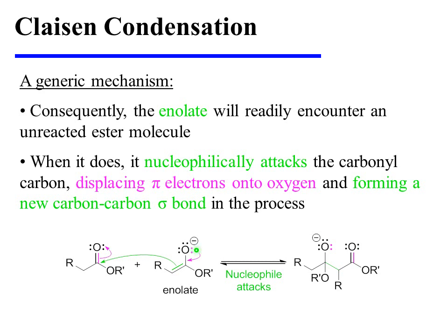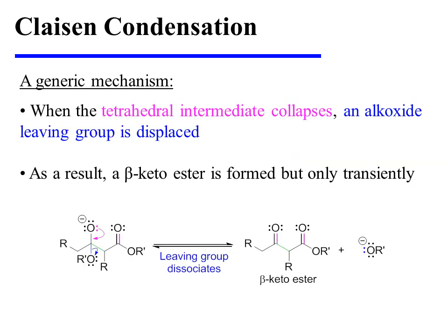When the ester enolate encounters an unreacted ester molecule, it nucleophilically attacks the carbonyl carbon, displacing pi electrons onto oxygen. A new carbon-carbon sigma bond is formed in the process. When the tetrahedral intermediate collapses, an alkoxide leaving group is displaced. As a result, a beta-ketoester is formed, but only transiently.